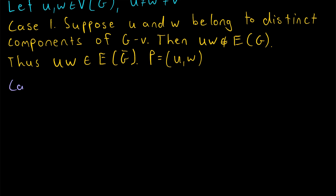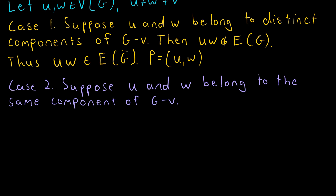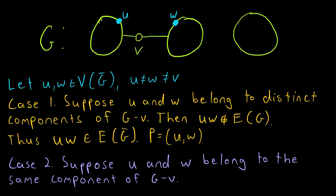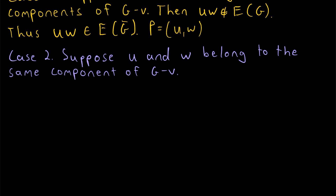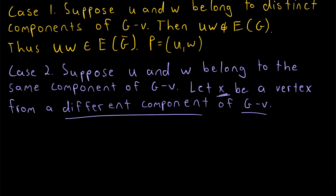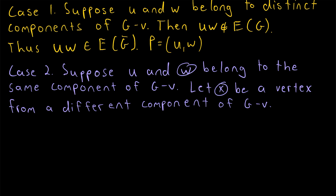Case two is similar. The other possibility is that U and W belong to the same component of G minus V. Since V is a cut vertex of G, G minus V must be disconnected — it has at least two components. Since U and W are in the same component, there's at least one other component, so let X be a vertex from that different component.